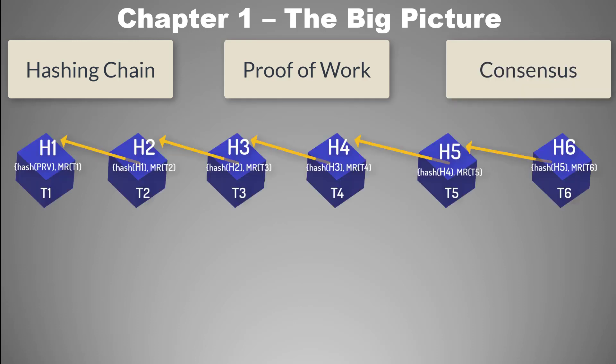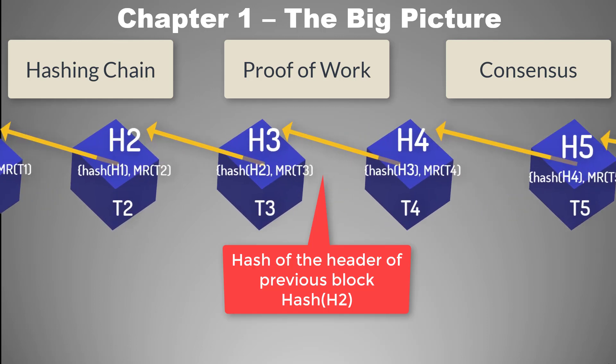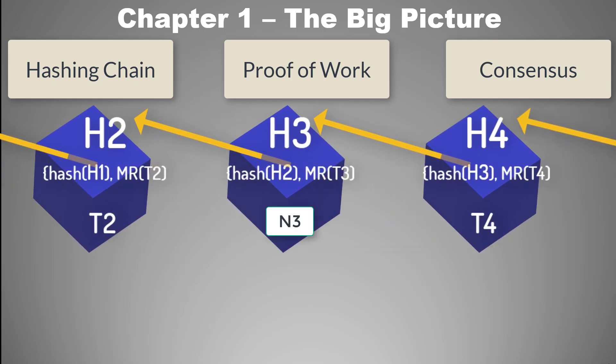If you recall, each block in the blockchain has the hash of the header of the previous block. So if you alter any block, its header will change because its header has the Merkle root of the transactions. This will change the hash of the header, so the subsequent block is no more pointing to the right block. So you will have to change the header of that block also, and because you change the header of that block, you will have to change the header of its following block.